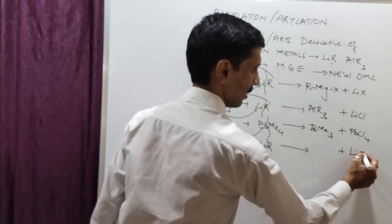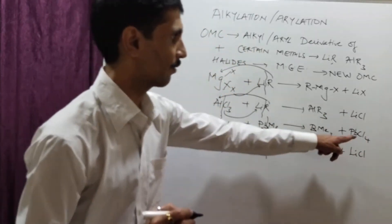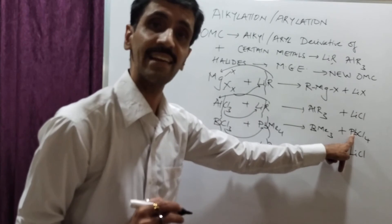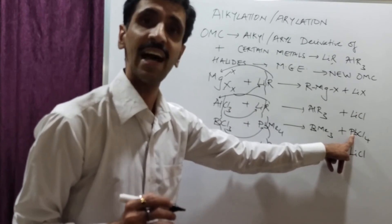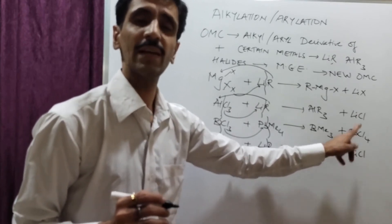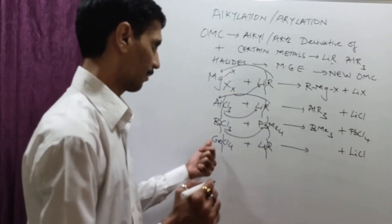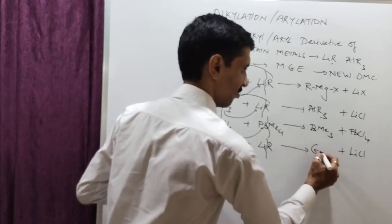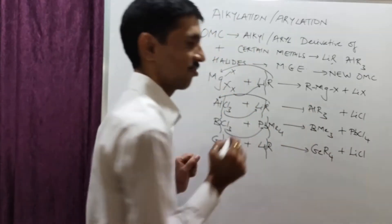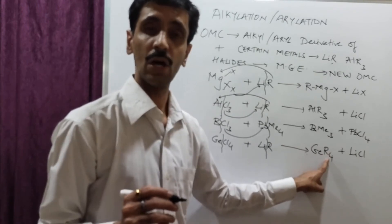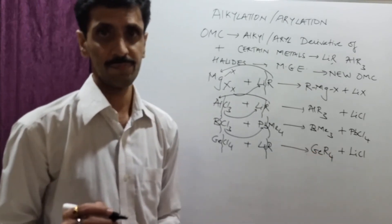When it is going to be 4 and when it's going to be 1, I hope you understood this. That depends upon the nature of the metal with which the halogen is attached to. So, here, because it is lithium, it's monovalent. So, it will be only 1 chlorine. And then, of course, what we are going to get over here is GeR4. Germanium is tetravalent. So, it is going to be tetra alkyl or aryl germanium.